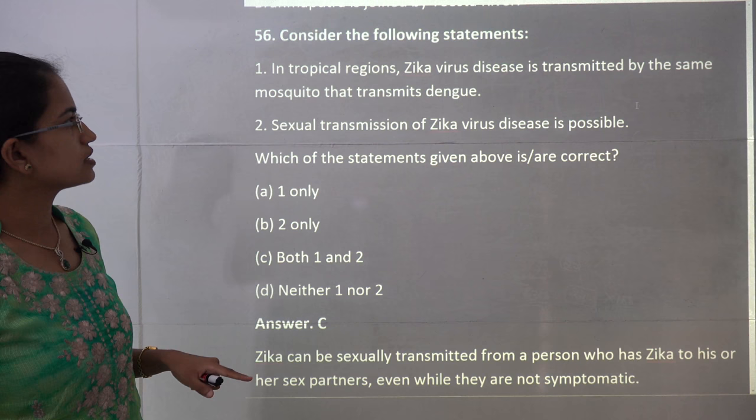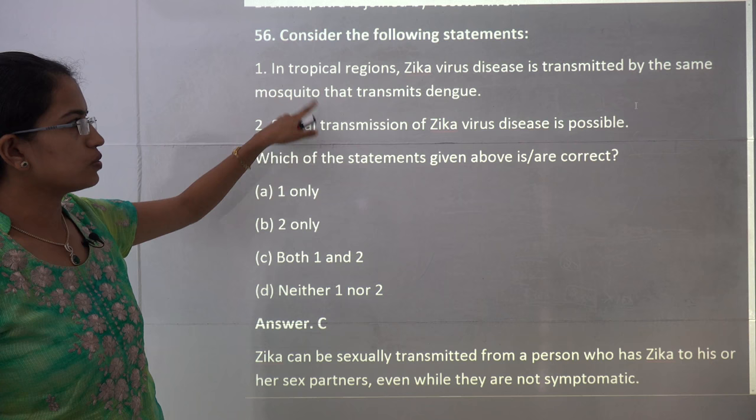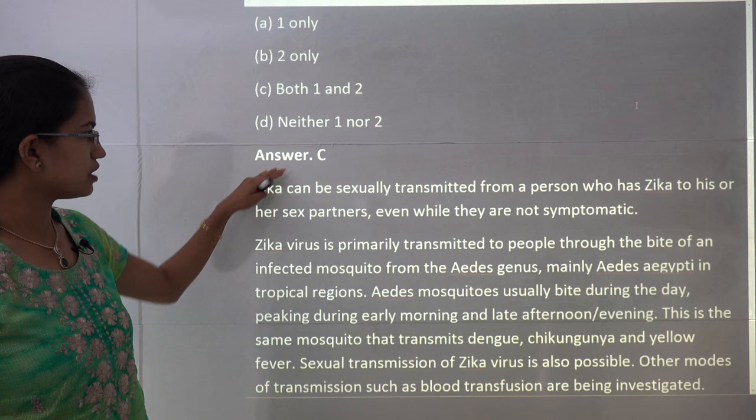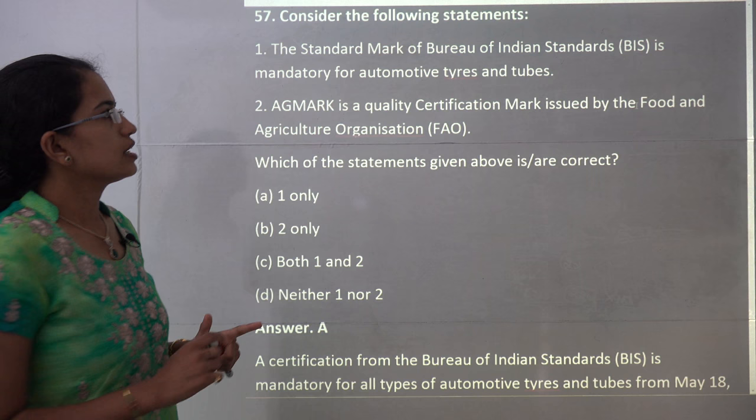The next question states that Zika virus is transmitted by the same mosquito that transmits Dengue, Yellow Fever, and Chikungunya, and that sexual transmission is also possible. Both of these statements are correct, so both 1 and 2 are correct, making C the correct choice.